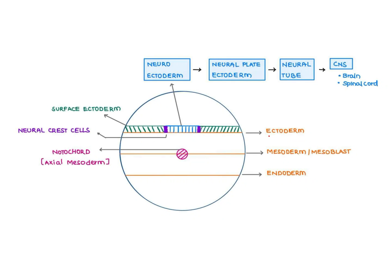The ectoderm, mesoderm or mesoblast, and endoderm are generally derived from the epiblast. There is a layer in the initial phase of the embryo known as the epiblast that is divided into ectoderm, mesoderm, and endoderm, and they give rise to different structures.